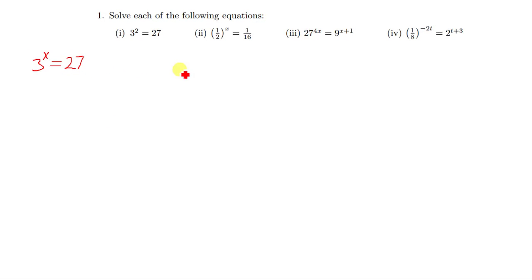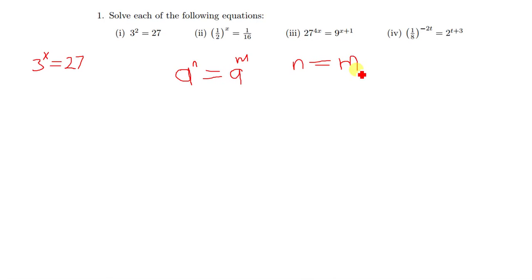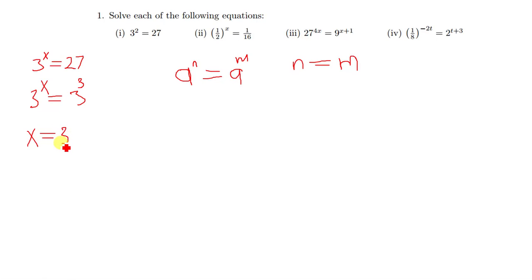When you have a to the power n equal to a to the power m, and the bases are the same, it means that n is equal to m. So we make 27 to base 3, which gives us 3 to the power 3. Since the bases are now the same, the powers are equal as well, meaning x is equal to 3 as our answer.